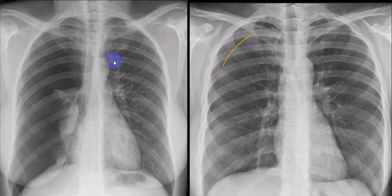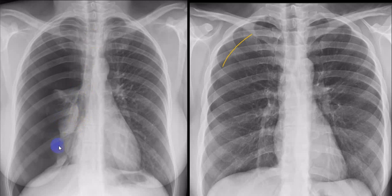Looking here, this is a breast shadow, and this is also a breast shadow. You can see that the right border of the heart is not clearly visible; the trachea is slightly towards the right side, and you can see bronchial markings with a shadow here. This is a right middle lobe collapse. To further identify, you would need to go for a lateral view.